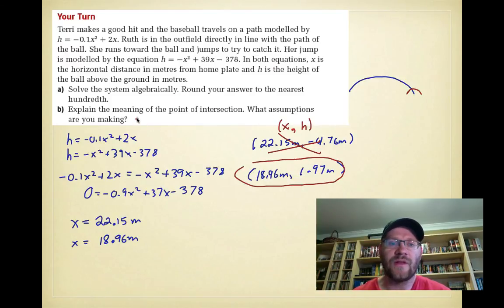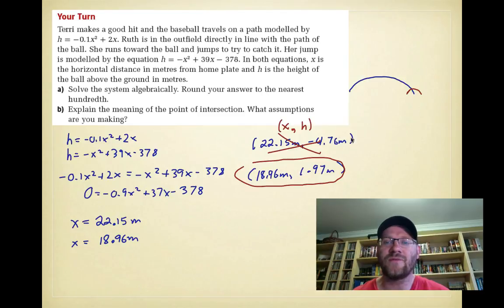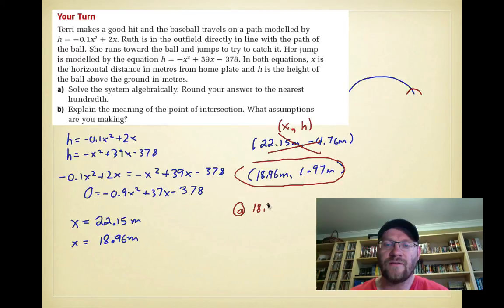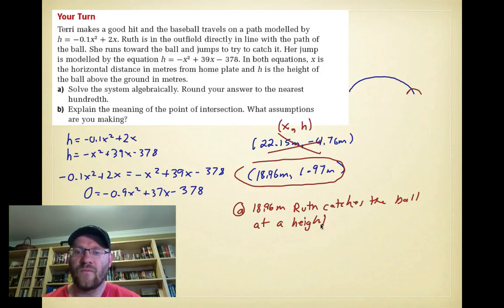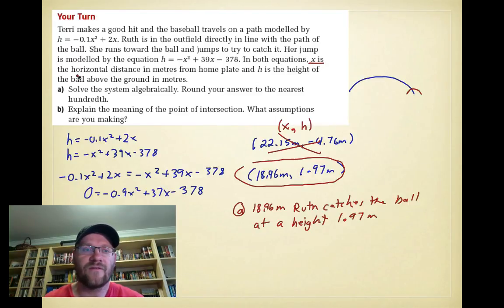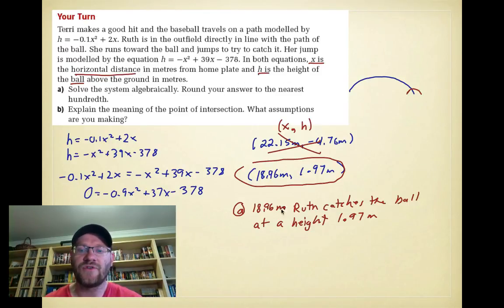We solved the system algebraically and rounded to the nearest hundredth. The assumption we made is that height cannot be negative, so we discarded the first answer. The point of intersection means that at 18.96 meters from home plate, Ruth catches the ball at a height of 1.97 meters above the ground.